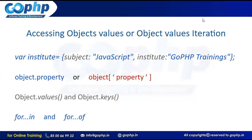Good morning guys. In this session we are going to discuss about accessing object values. In the previous session we discussed about for and for-of flow. Now in this session I want to discuss about Object.values and Object.keys — how we can extract the values of an object and how we can extract the keys of an object.